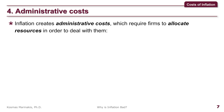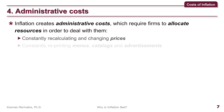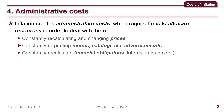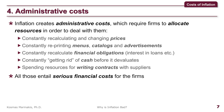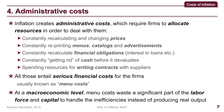Another issue is that inflation creates administrative costs which require firms to allocate resources to deal with them. For instance, workers must dedicate time, effort, and other resources — along with financial costs — to constantly recalculate and change prices. Imagine a small convenience store carrying more than 4,000 codes that needs to reprice and re-tag all those items every few weeks. Moreover, it is costly to constantly reprint menus, catalogs, and advertisements, to recalculate financial obligations, to race to get rid of cash before it devalues, or to spend money on lawyers writing contracts with suppliers to control input price increases. All those entail serious financial costs and are usually known as menu costs. At the macroeconomic level, menu costs waste a significant part of the labor force and capital in the economy on handling these inefficiencies instead of producing real output.